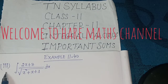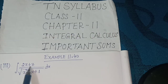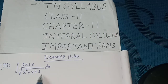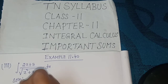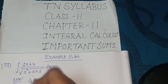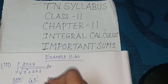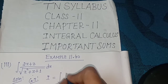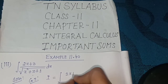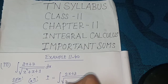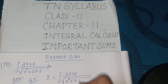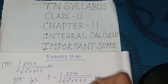Example 11.40, third subdivision: find the integral of (2x + 3) divided by square root of (x² + x + 1) dx. Solution: given that I equals integral of (2x + 3) divided by square root of (x² + x + 1) dx.